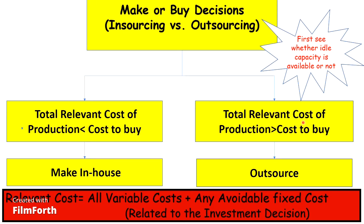If the total relevant cost of production is greater than the cost to buy, we should outsource it. Relevant and irrelevant cost has already been discussed in my previous video, for which the link is given in the description box. Relevant cost consists of all the variable cost plus any avoidable fixed cost related to the investment decision.